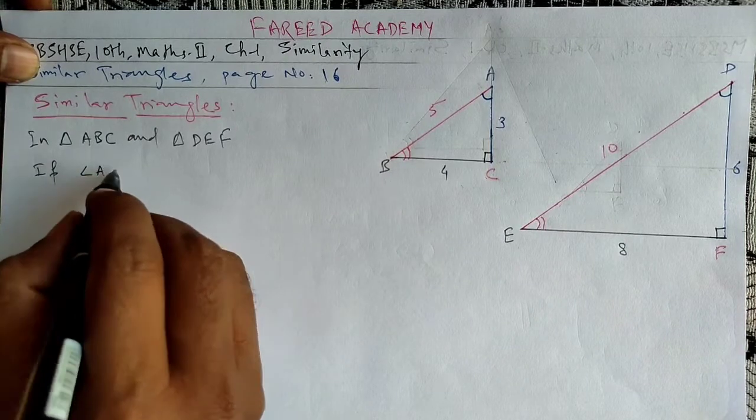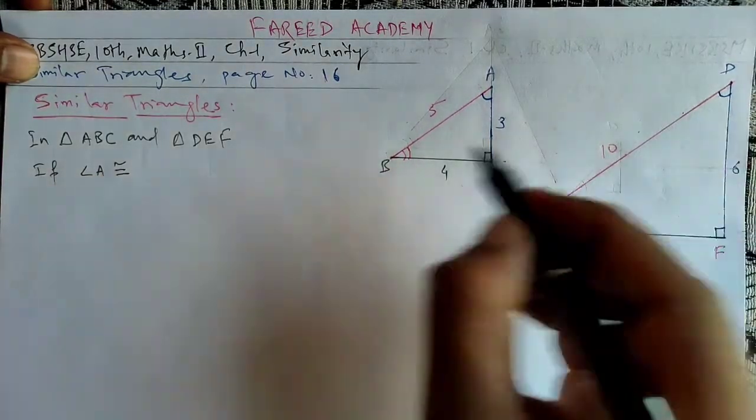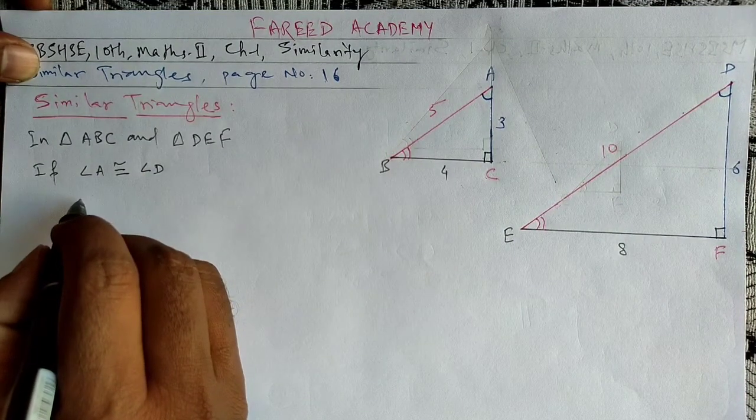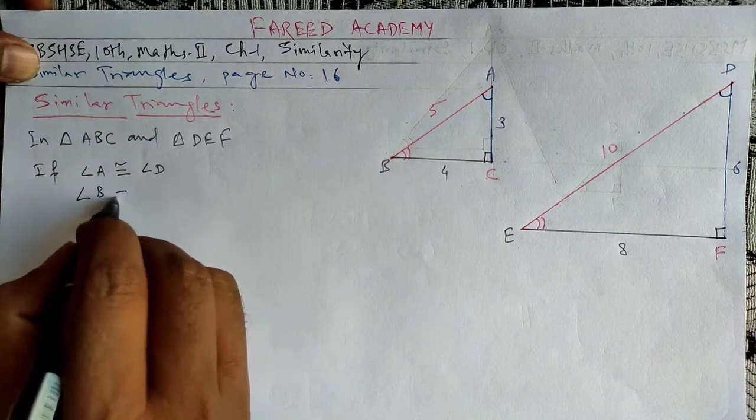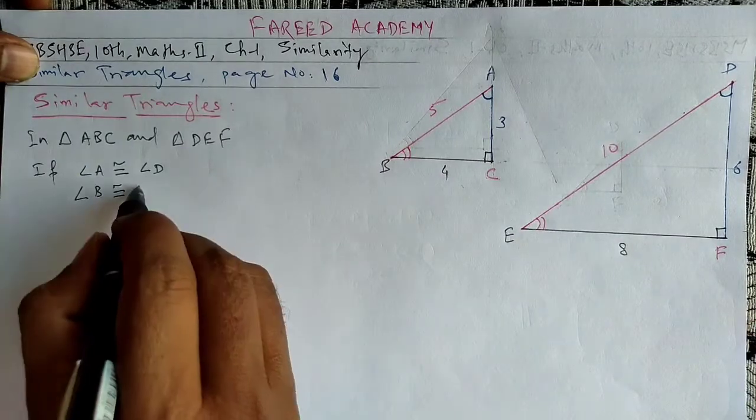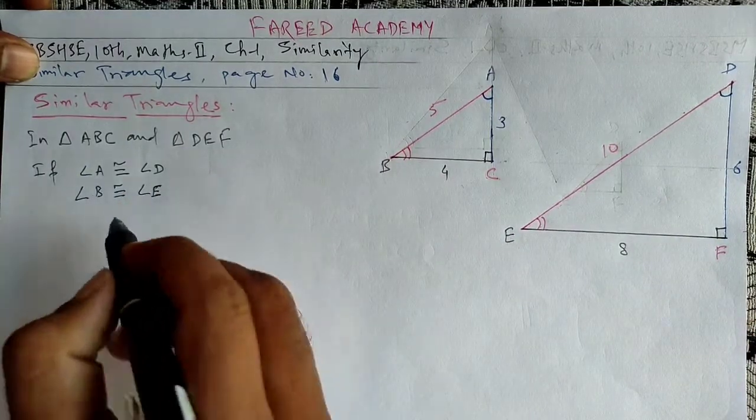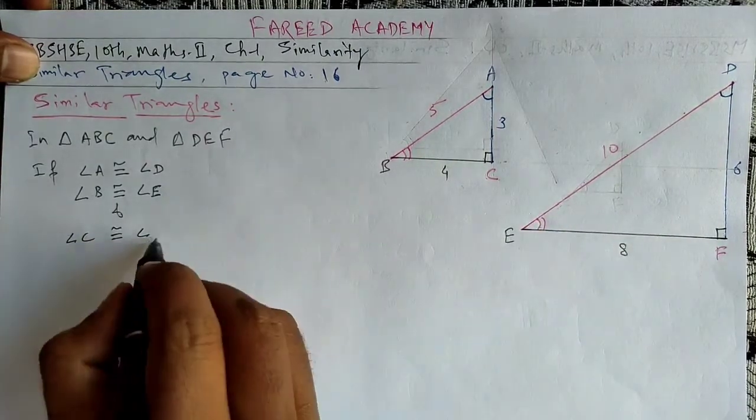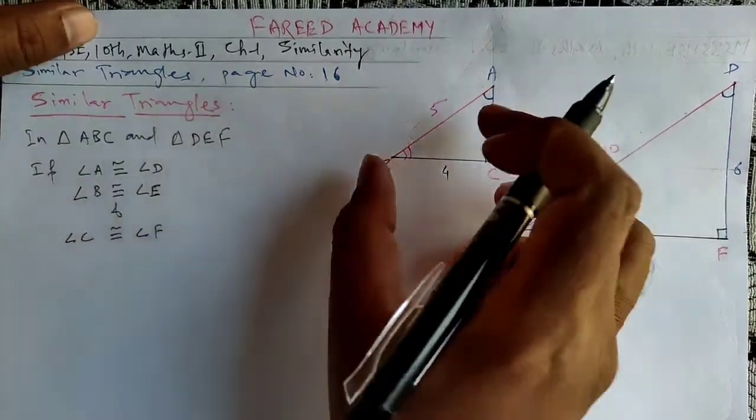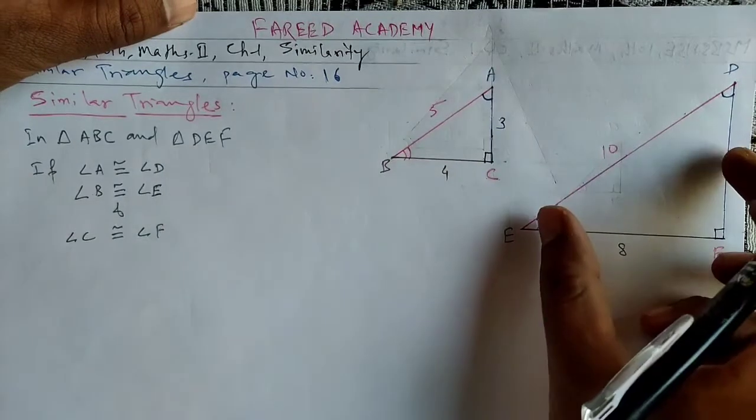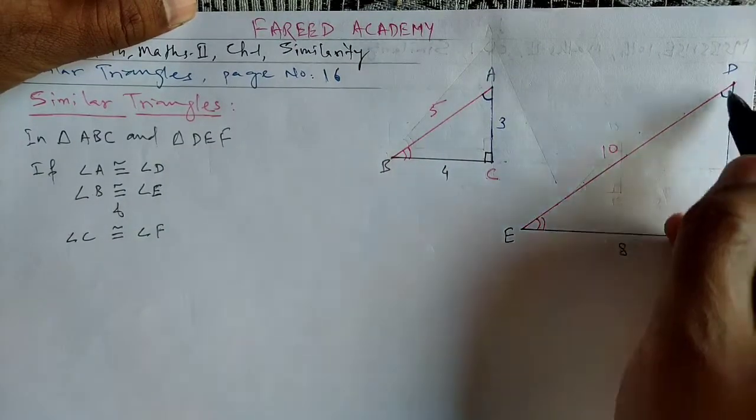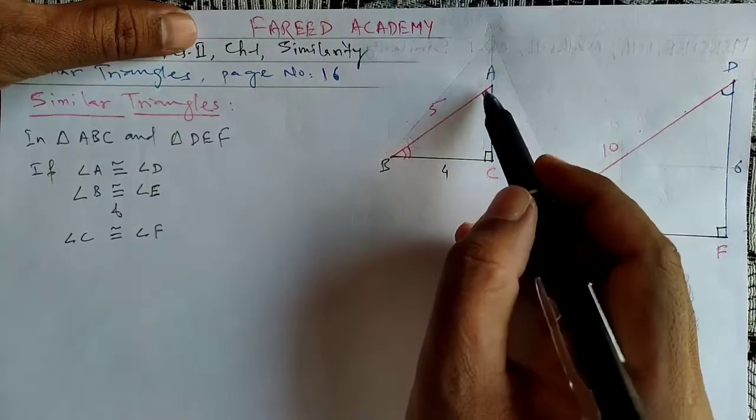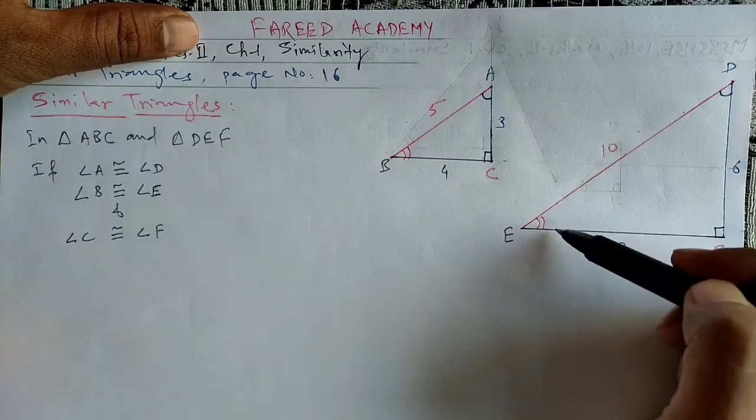If they are congruent, corresponding three angles should be congruent, and the corresponding sides: AB corresponds to DE, BC corresponds to EF, and AC corresponds to DF.